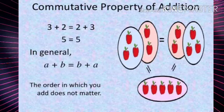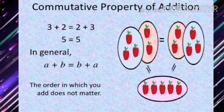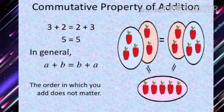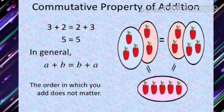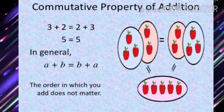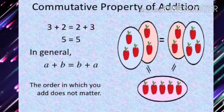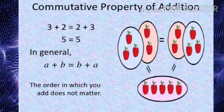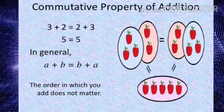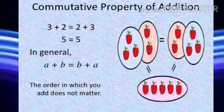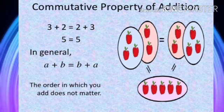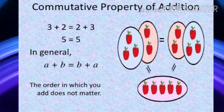Now we will study the commutative property of addition. 3 plus 2 is equal to 2 plus 3 — the sum in both cases is 5. Whether we add two apples to three apples or three apples to two apples, the sum will always be five apples. In general, a plus b equals b plus a. The order in which you add does not matter; the sum will always be the same.